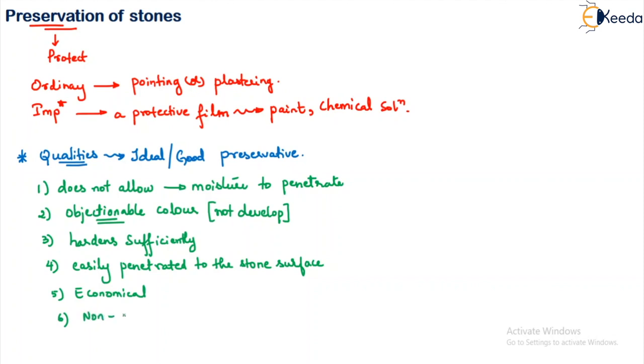Then, they should be non-corrosive because there are lot of chances that we are applying it on reinforced concrete structures where if suppose the steel is exposed, it should be non-corrosive as well as it should be harmless for the surface on which we are applying it or for the people who are applying it.